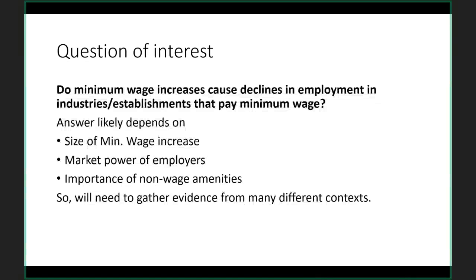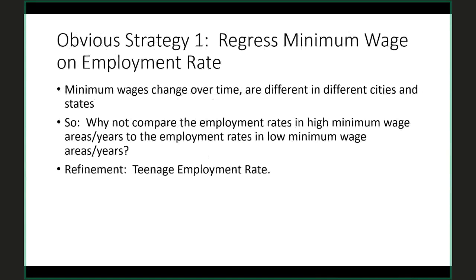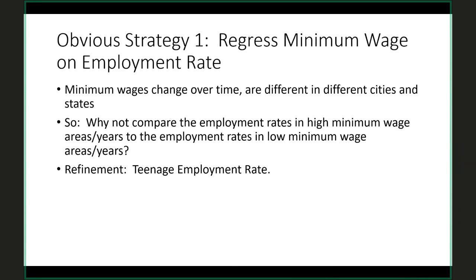So in an ideal world, we would look at the effect of many different minimum wage increases to get an overall picture. The obvious starting point is to run a regression where we compare the minimum wages in various places to employment levels in those areas. For example, employment in state i at time t equals beta-naught plus beta-1 times the minimum wage at time t. This tells us whether states with high minimum wages have higher or lower employment than states with low minimum wages. We could also look at teenage employment rates — the rates of workers most likely to be paid minimum wage.